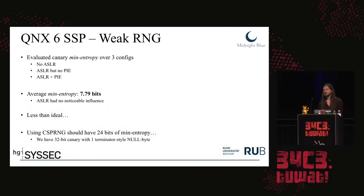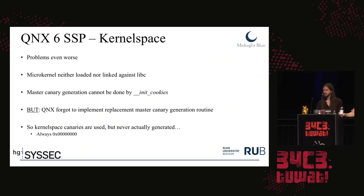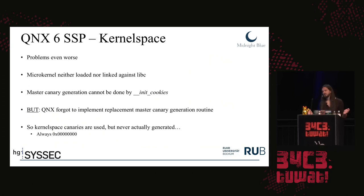We evaluated canary min-entropy across three configurations: without ASLR; with ASLR but without PIE; and with ASLR and PIE. We found the average min-entropy of canaries to be 7.79 bits, and ASLR had no noticeable influence. Using a CSPRNG they should have had at least 24 bits of min-entropy with one null byte included in the 32-bit canary, or 32 bits with a full canary. In kernel space the problems are even worse: the microkernel is neither loaded nor linked against libc, so the master canary cannot be generated by init_cookies. They should have implemented a master canary generation function in the kernel but forgot to do so. As a result, the microkernel uses stack canaries across various functions, but the canary was never initialized — it's located in BSS, initialized to all zeros at very early boot, so it's always zero, which defeats the purpose entirely.